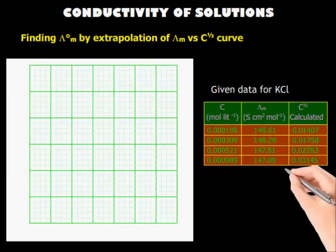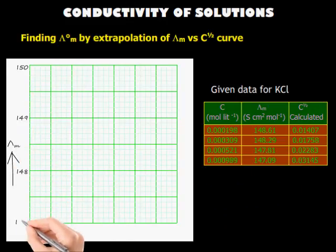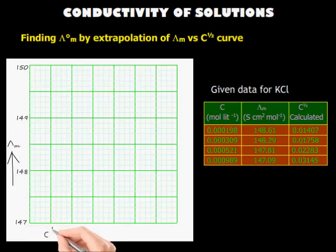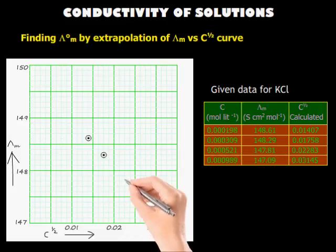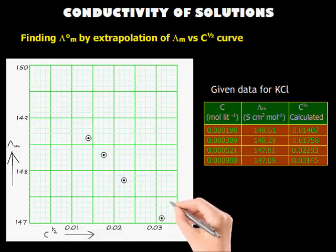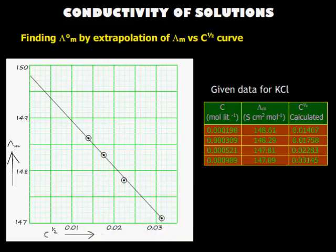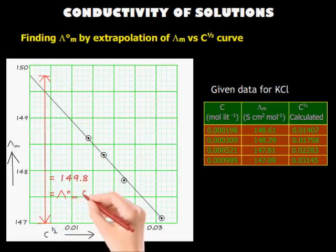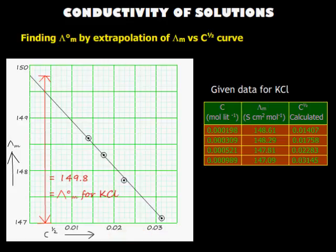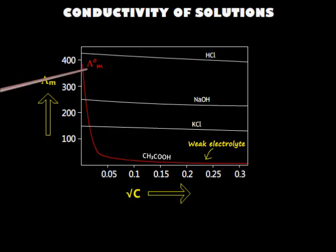We are given data from which we calculate the square root of concentration. Molar conductivity lambda m is taken as the ordinate, and square root of concentration as the abscissa. We draw the points using values from the given data, then draw a straight line through these points and extrapolate it until it touches the ordinate. This intercept is the limiting molar conductivity of KCl at infinite dilution. For weak electrolytes, the graph is not a straight line, so limiting molar conductivity cannot be calculated by graphical extrapolation.